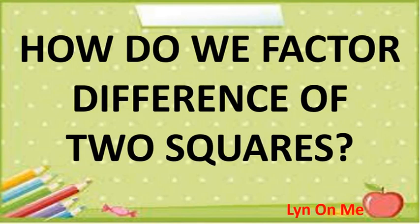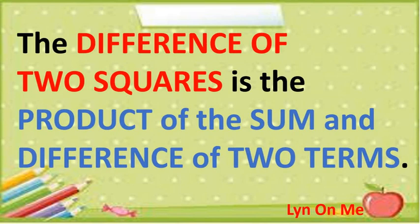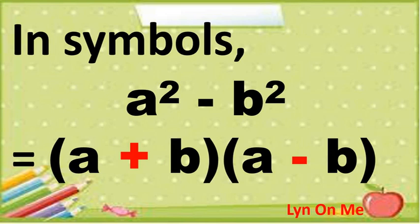Let's go back to our question: how do we factor the difference of two squares? The difference of two squares is the product of the sum and difference of two terms. In symbols, a squared minus b squared is equal to the product of (a plus b) and (a minus b).